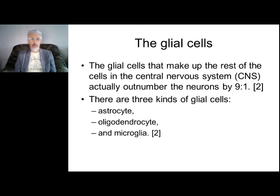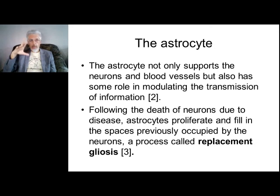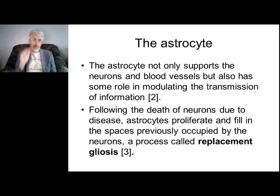There are three types of glial cells. Astrocytes not only support neurons and blood vessels, but also have roles in modulating the transmission of information. Astrocytes have a very important role in neurotransmission. When we count only neurons, it is not sufficient because astrocytes and neuroglia take very important roles in neurotransmission and conduct signals. In general, all cells situated in our nervous system are responsible for neurotransmission.